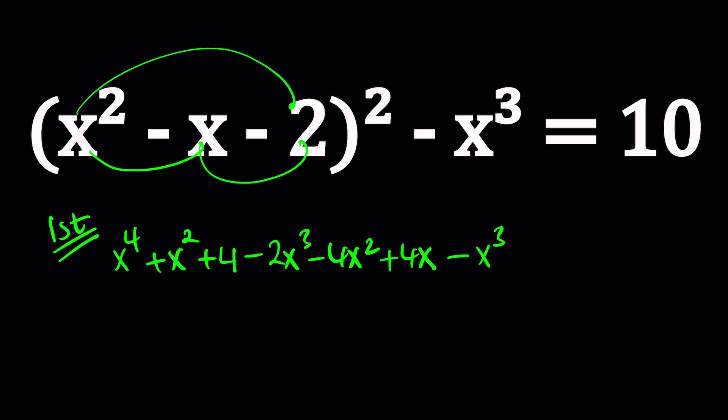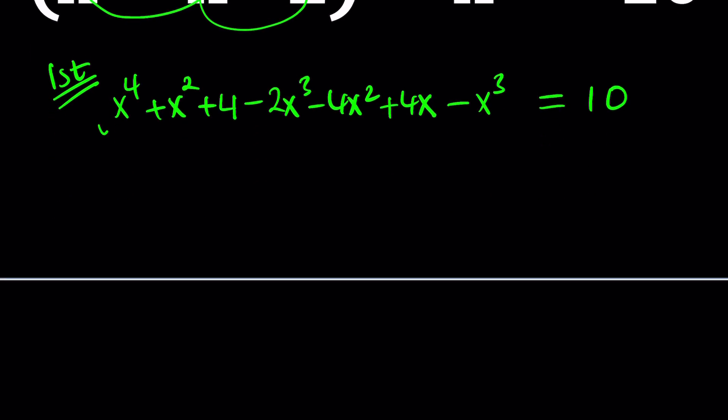And then I'm going to subtract x cubed from it. And the whole thing is going to equal 10. Now, we have x to the fourth power. And then x cubed, if you combine like terms, you get minus 3x cubed. And then we have x squared and minus 4x squared. That's going to give you minus 3x squared.